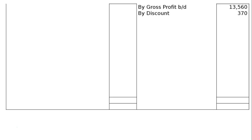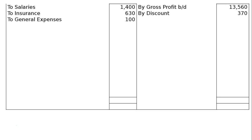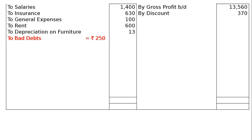Next is by discount, which is given in the credit column of the trial balance, hence it will be shown as income. Then: salaries Rs. 1,400 in the debit column, insurance Rs. 630, general expenses Rs. 100, rent Rs. 600, depreciation on furniture Rs. 13, bad debts Rs. 250. This bad debts figure is given in the debit column of the trial balance.